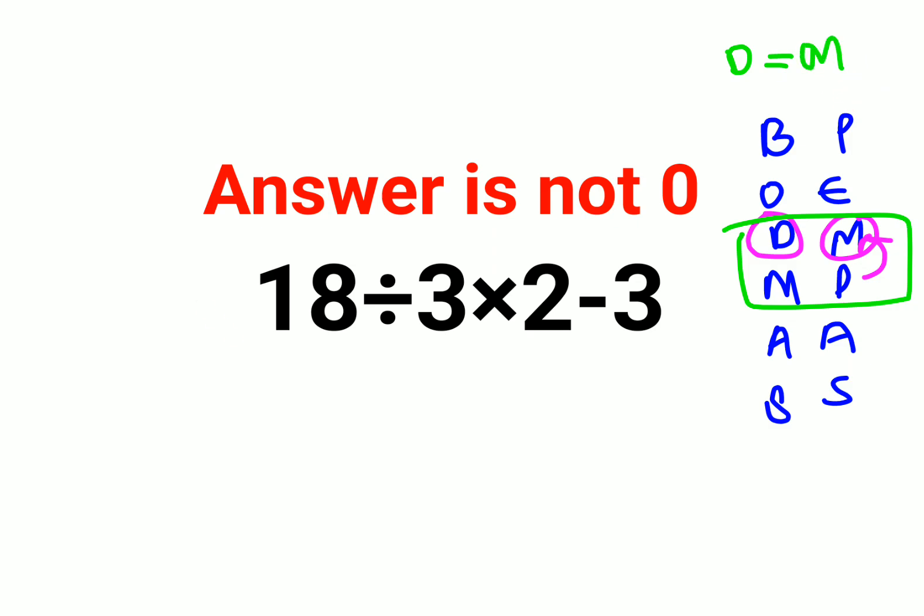So now when you have a sum like this, you will go from left to right. Whatever operation happens to be coming first from your left-hand side should be done first. So in this case, first we will do 18 divided by 3, that gets you 6, and then we will continue the rest. So 6 into 2 minus 3. 6 into 2 gets you 12 minus 3. Answer is 9.